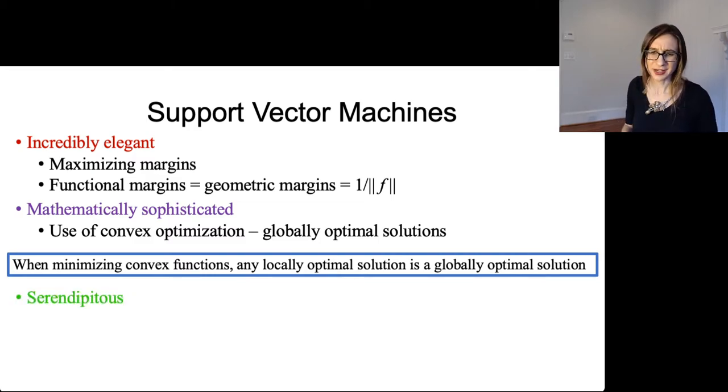It's also serendipitous. It's actually really lucky that the support vectors themselves have this beautiful interpretation. The support vectors are the closest points to the decision boundary. And the whole function ends up relying just on those points.